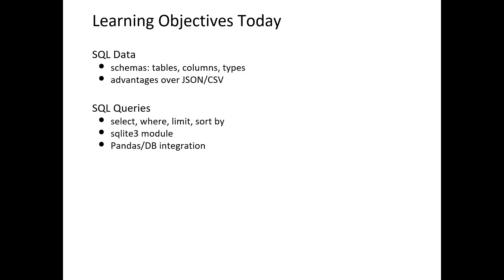For today, we'll be looking at how data is organized in a database — there's more than one table, how to extract columns, what types are associated with that data, and comparing databases to JSON and CSV files. In the second part, we'll look at how to extract data from a database. The keywords are going to be SELECT, WHERE, LIMIT, ORDER BY, and FROM. We'll be using the SQLite3 module — don't worry, this comes with Python, nothing extra to install. We'll be using pandas as our way to extract information from the database.